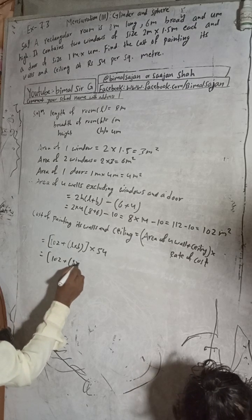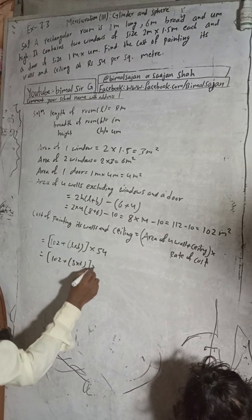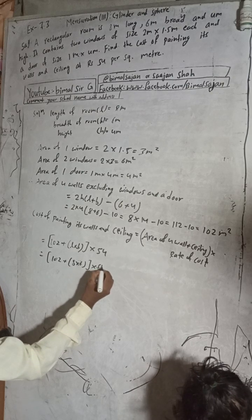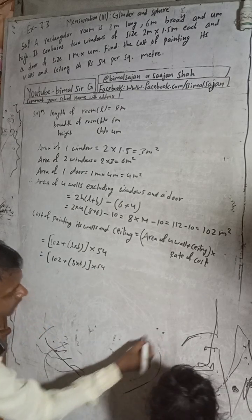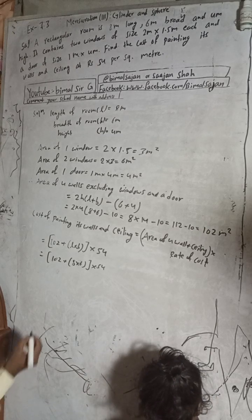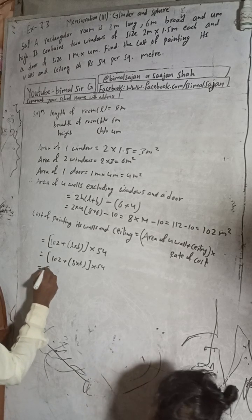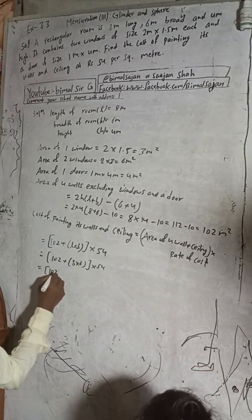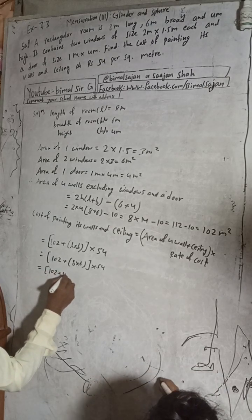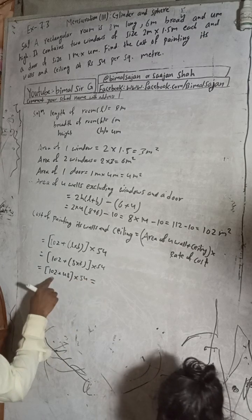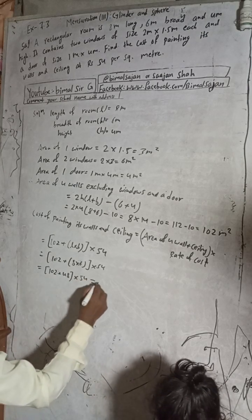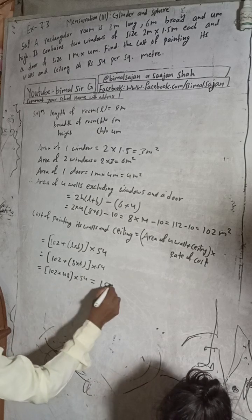So 102 plus 8 into 6, that's 48, into 54. The rate of cost is 54 rupees per meter square for painting ceiling and walls. So this is 102 plus 48 into 54.